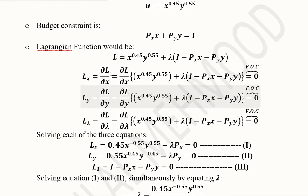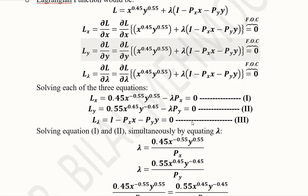We can do the partial differentiation of the Lagrangian function with respect to X, with respect to Y, and with respect to lambda. This is how we solve it, and in the next step you will see the solution.